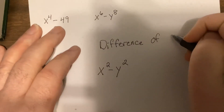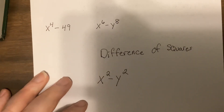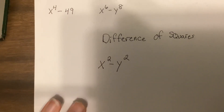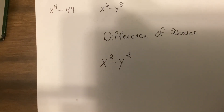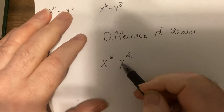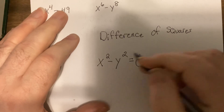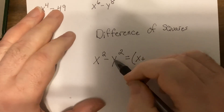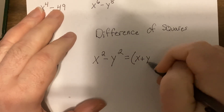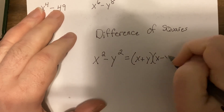It's a pattern they found out. What was noticed by mathematicians throughout history is that if you have a squared term minus a squared term, you can actually break that up into what's being squared plus what's being squared, and what's being squared minus what's being squared.